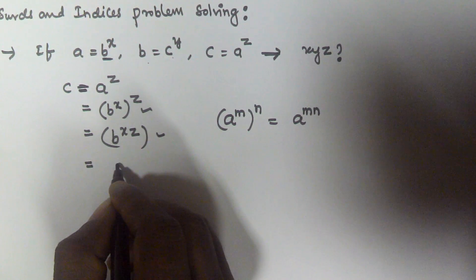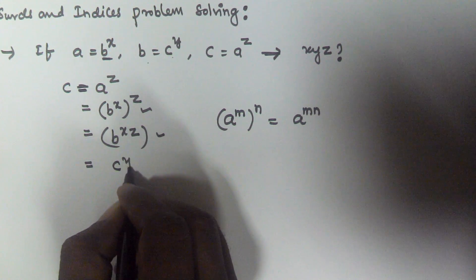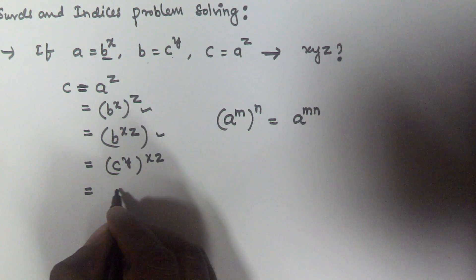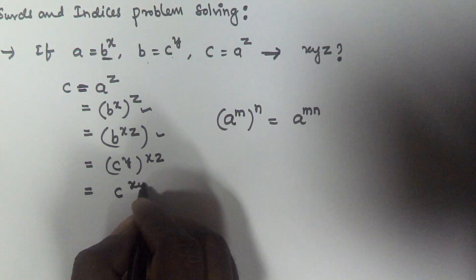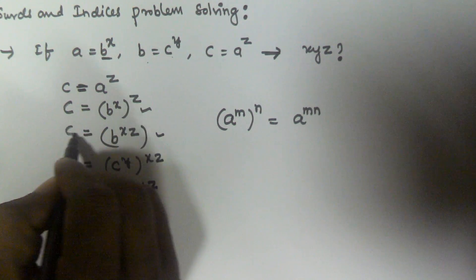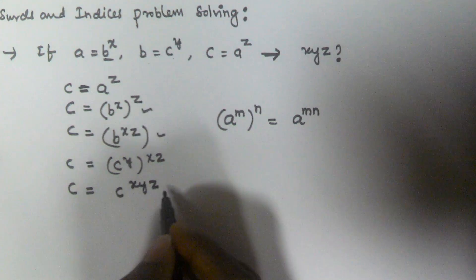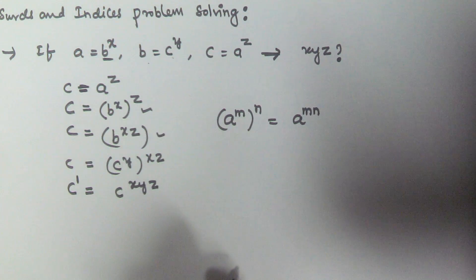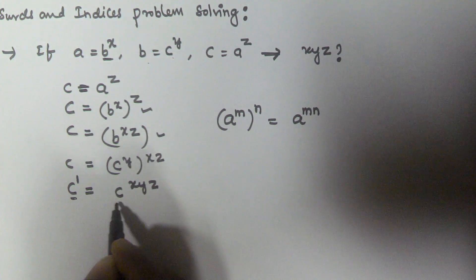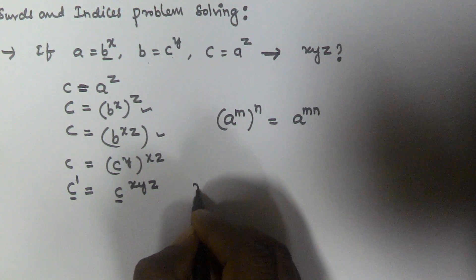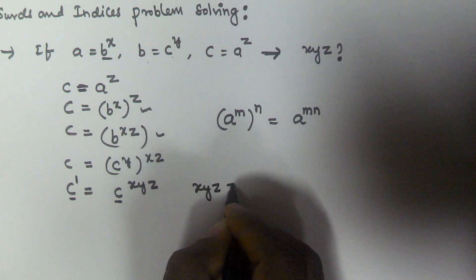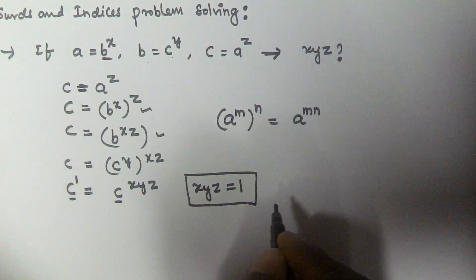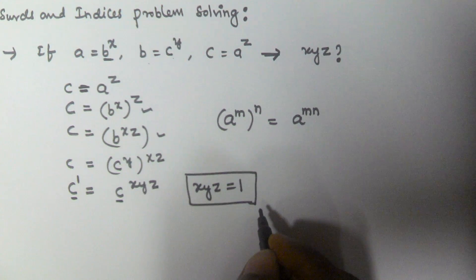Substituting b equals c to the power of y, we get c equals c to the power of y, raised to the power of xz. Using the same formula again, this becomes c to the power of xyz. Since c equals c to the power of xyz, and c can be written as c to the power of 1, the bases are the same, so the exponents must be equal. Therefore xyz equals 1.